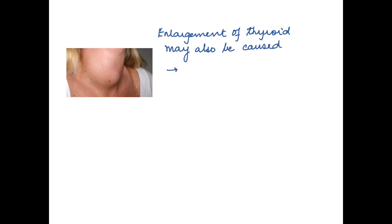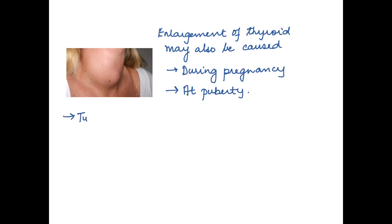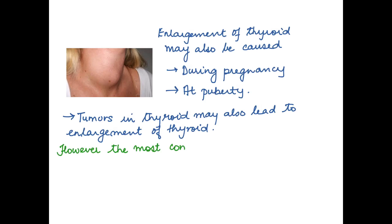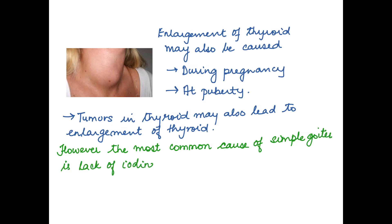This goiter results from hyposecretion of thyroxine. Enlargement of the thyroid may also be caused during pregnancy, and in certain cases during puberty. Tumors in the thyroid gland may also lead to its enlargement. However, the most common problem associated with the thyroid gland is lack of iodine in the diet, which causes the swelling called simple goiter.